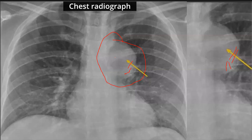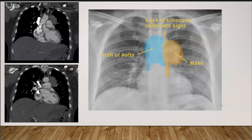Also, the posterior ribs are well seen through the mass, further confirming it is not in the posterior mediastinum, in addition to the descending aortic interface sign. This is the CT scan of the patient showing coronal views, with the mass demonstrating soft tissue density.